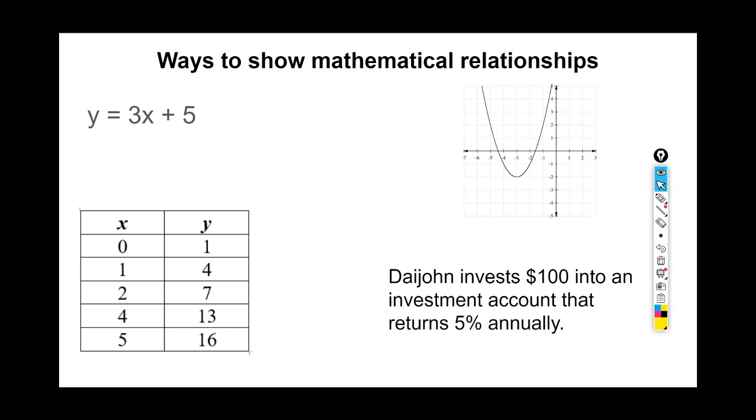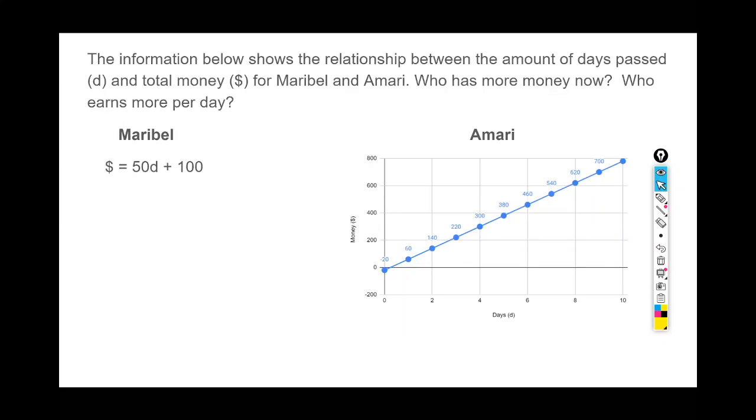So let's start by looking at an example together. The information below shows the relationship between the amount of days passed d and the total money for Maribel and Amari. Who has more money now and who earns more money per day?